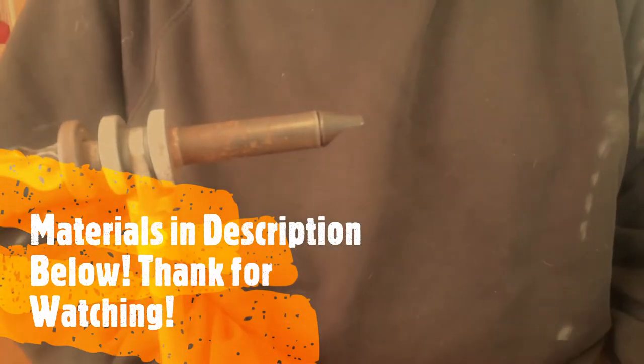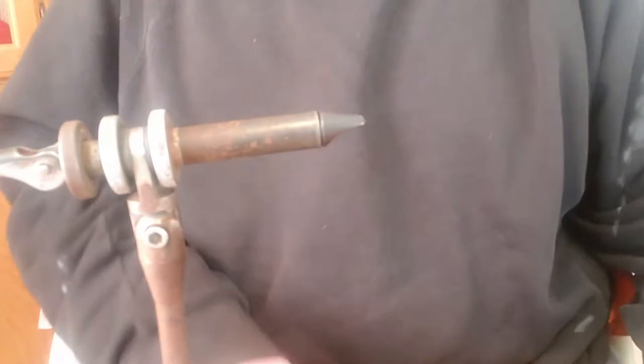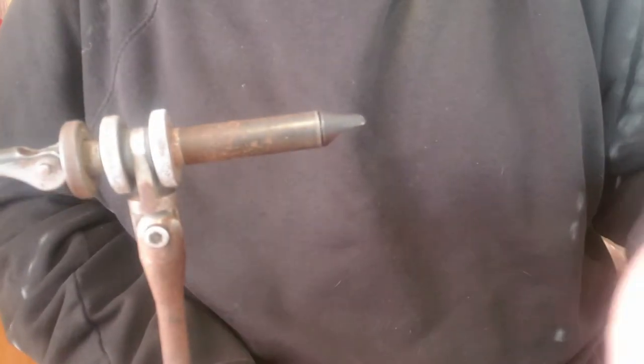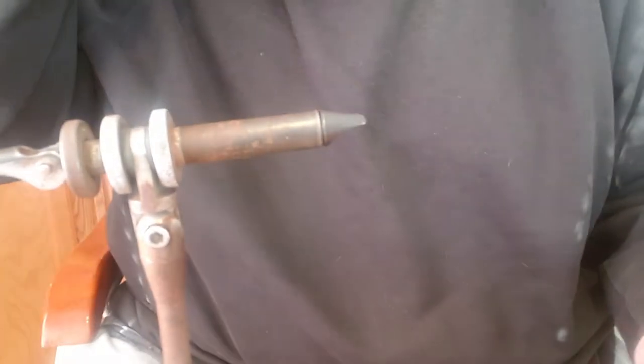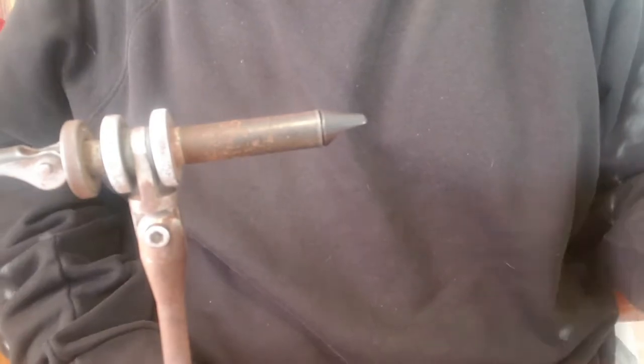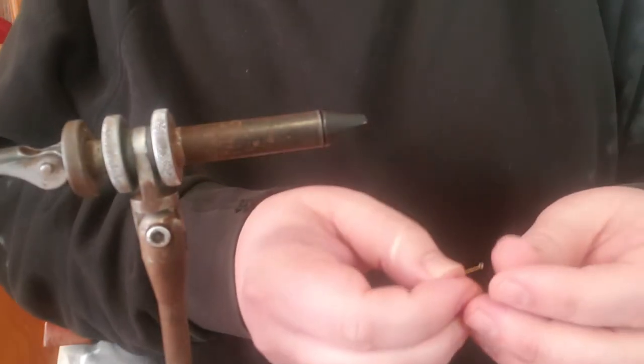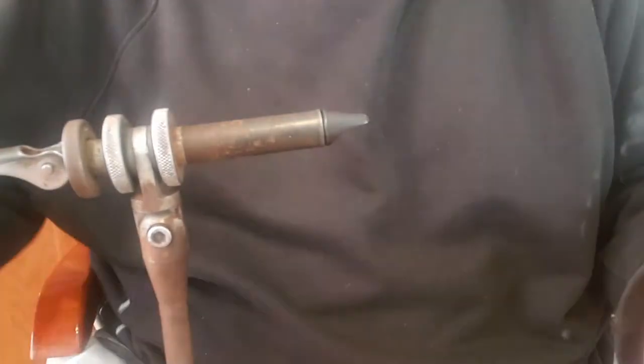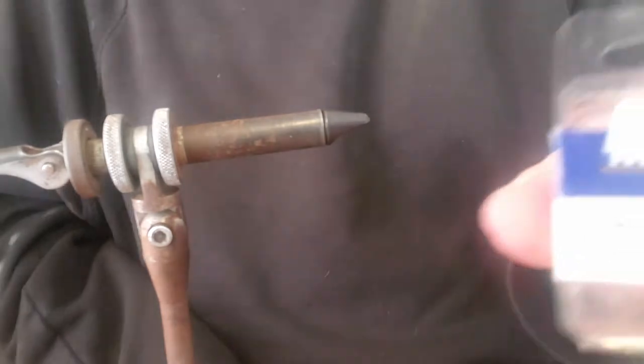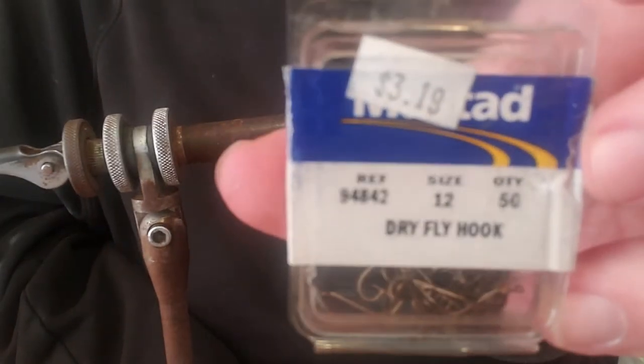Welcome back to another episode with FNS Outdoor Adventures. Hope everybody's doing good today. Today we're going to be tying a dry fly, a brown ant. You can do it black, brown, whatever color you wish. We're going to start with a size 12 dry fly hook.